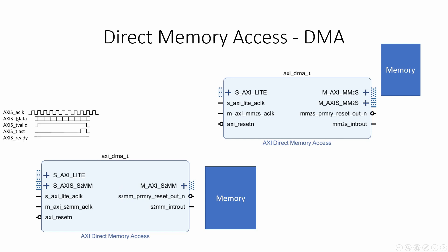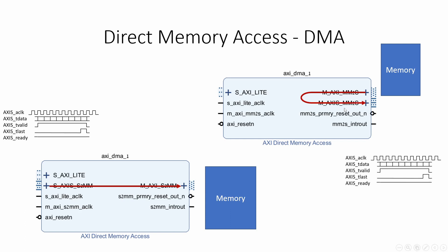When the AXI bus raises the valid signal, the write DMA starts writing data to the location in memory. The read DMA is actually a master on both ends — once it is configured, it starts reading from memory and sends the data out without any interference.